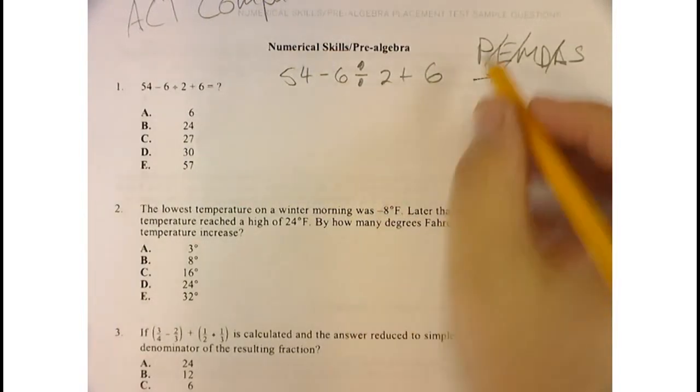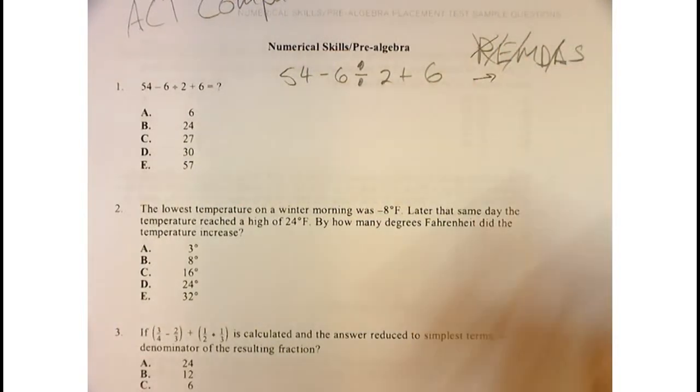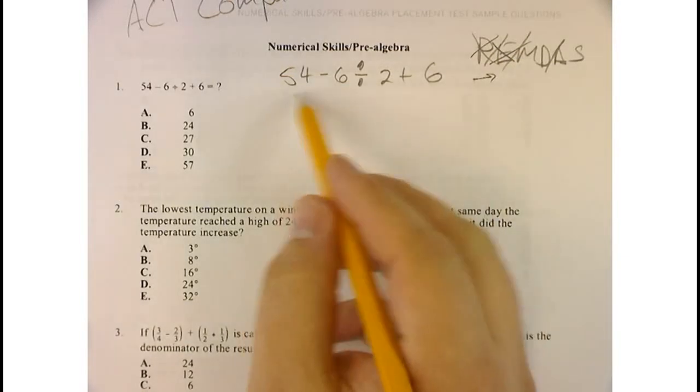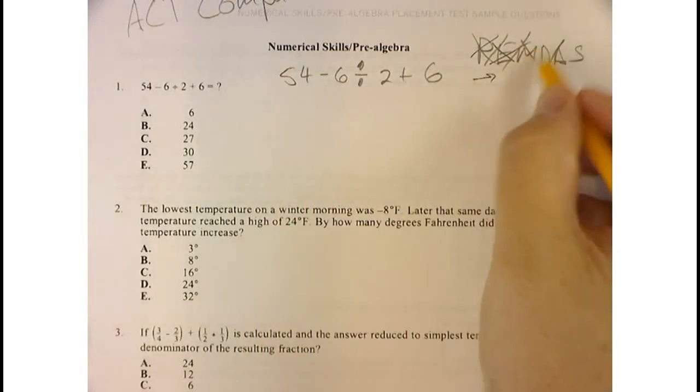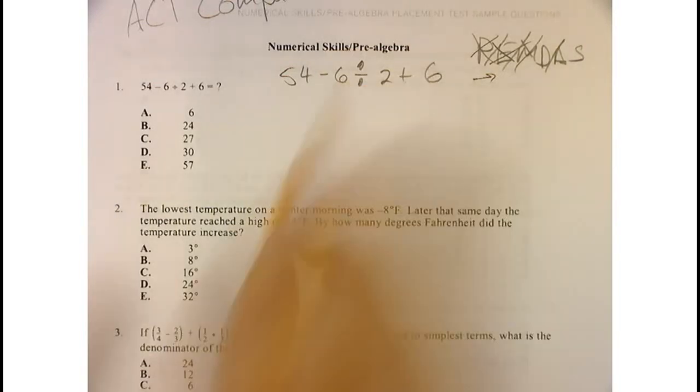So there are no parentheses, so I'm going to cross that off the list. There are no exponents. I'm going to cross that off the list. There isn't any multiplication operation, so I'm going to cross that off the list. Division, however, I do have some division.